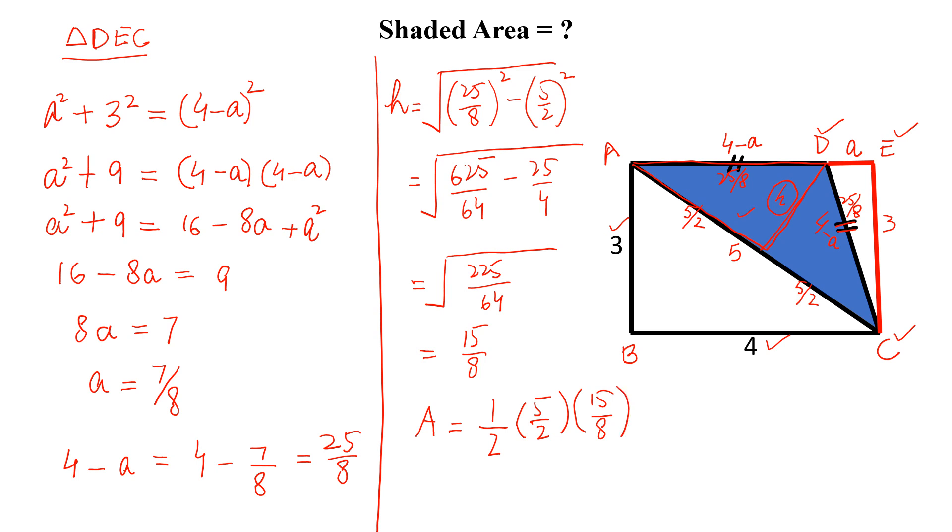But this is 2 times. So we will again multiply this by 2. And if we simplify this, this will be equal to 75 divided by 16 unit square. And this is the required shaded area.